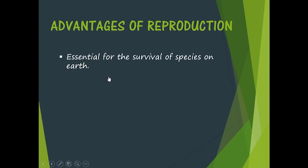First of all, reproduction is essential for the survival of species on earth. Our earth comprises millions of species and all living beings are mortal — sooner or later we have to die. When we die, if we do not reproduce, the individuals of our species will eventually finish. So the species will not exist any further if reproduction stops.